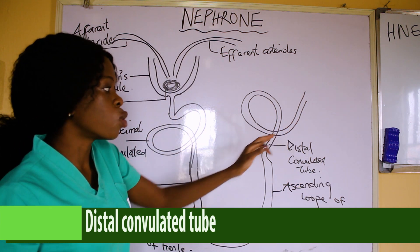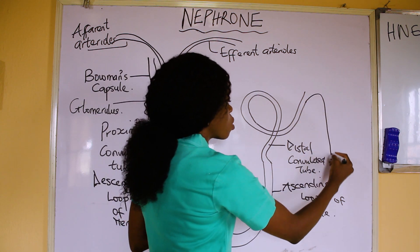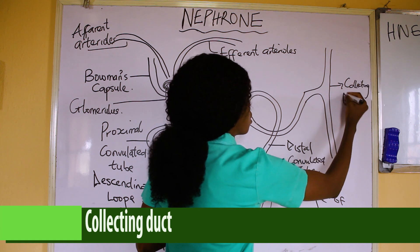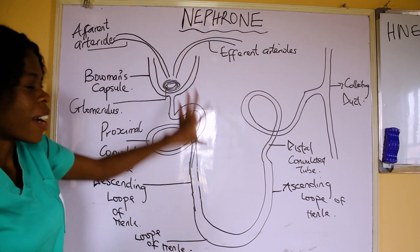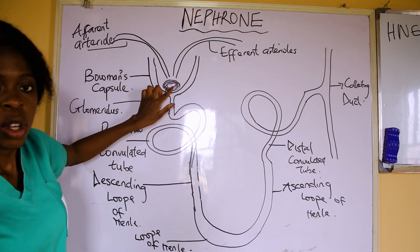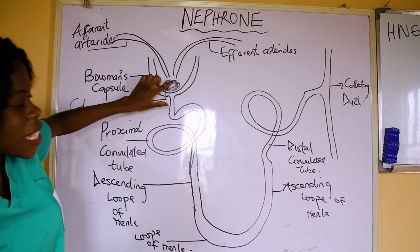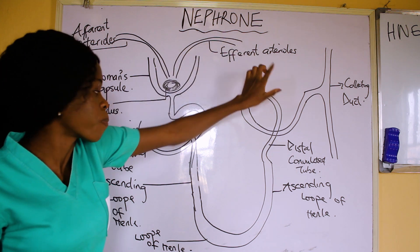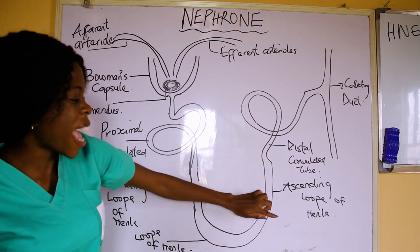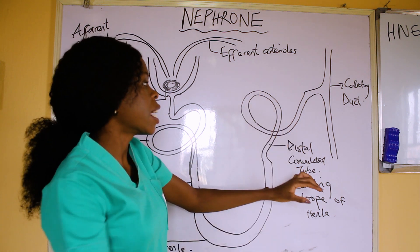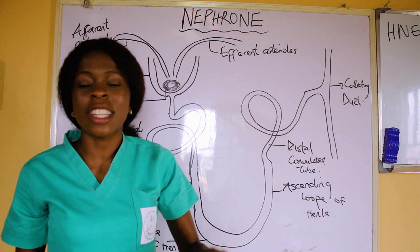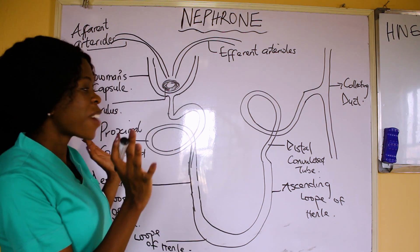From the Distal Convoluted Tube, that's when the final part is formed, which is the collecting duct. So that is the diagram of the nephron. It begins with the Bowman's capsule, and inside the Bowman's capsule we have the glomerulus, which is a semi-permeable membrane that helps to filter the blood. Then we have the afferent arteriole bringing blood and the efferent arteriole taking blood away. After that: the Proximal Convoluted Tube, the descending loop of Henle, the loop of Henle proper, the ascending loop of Henle, the Distal Convoluted Tube, and the collecting duct. Don't forget that the nephron is the functional unit of the kidney.